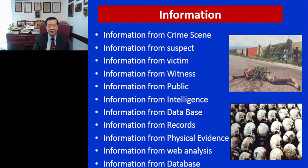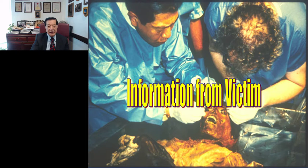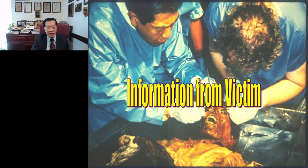At the scene, we look for information from the crime scene itself, from the suspect, from the victim, from witnesses, public intelligence, database records, physical evidence, and web analysis. For the victim today, not only is an autopsy conducted, but we also examine trace evidence on the eye socket, food residue between the teeth — which can tell us the victim's last meal and where he was eating.